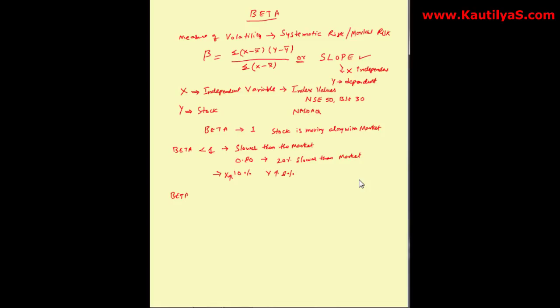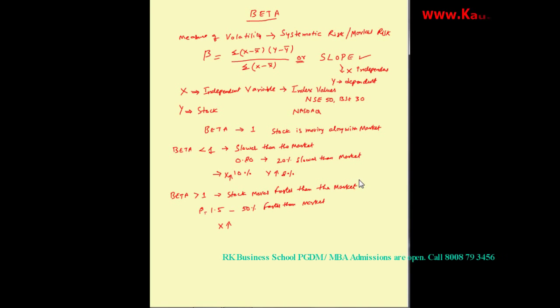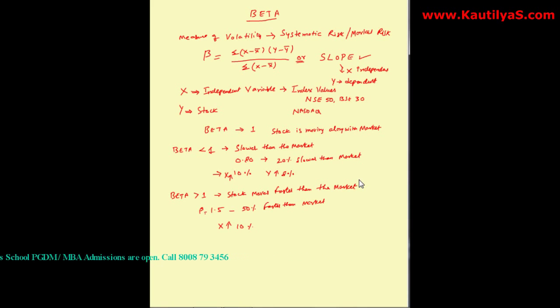Now, if beta of a stock is greater than one, the stock moves faster than the market. If a stock has a beta of 1.5, it is 50% faster than the market. So if the market increases by 10%, then the stock increases by 15%.